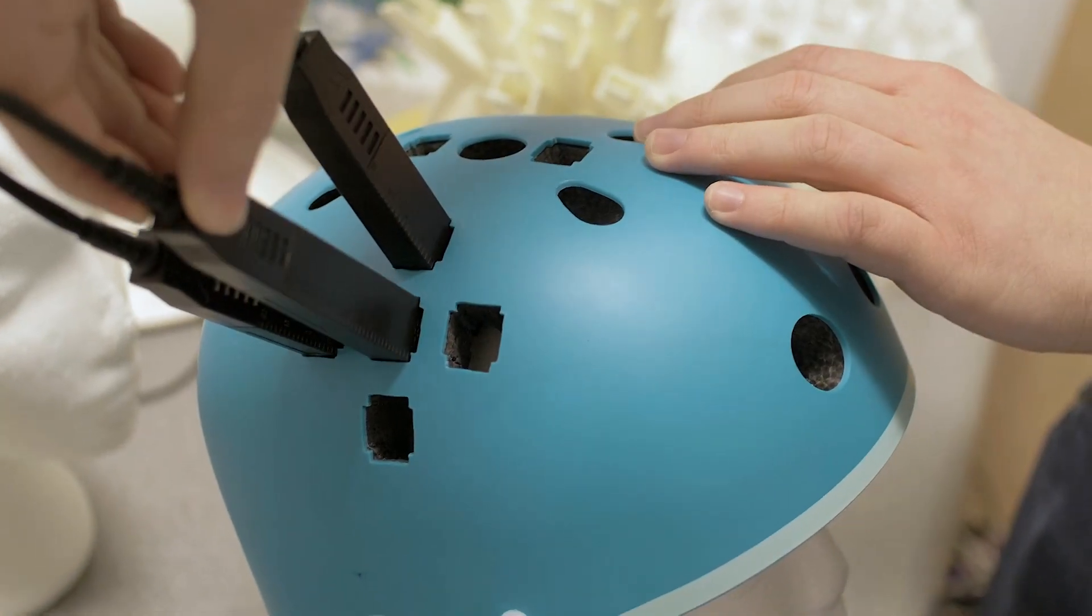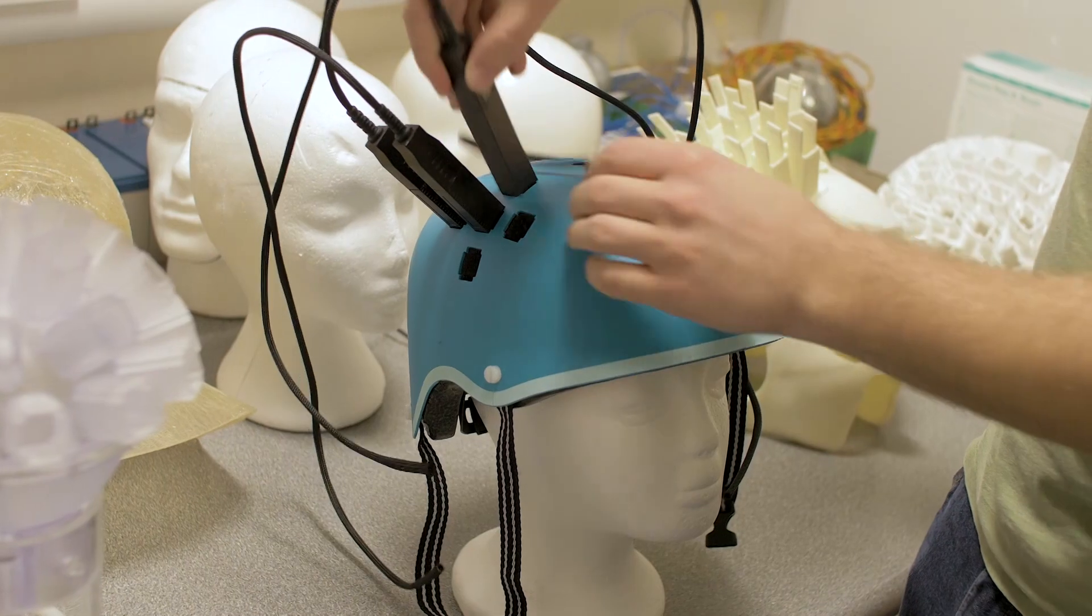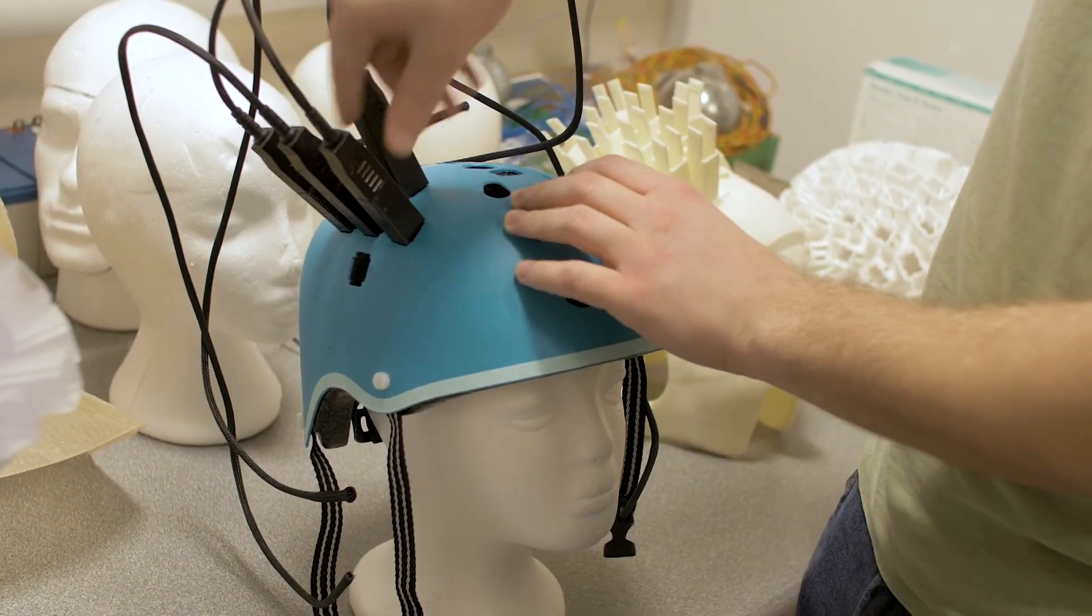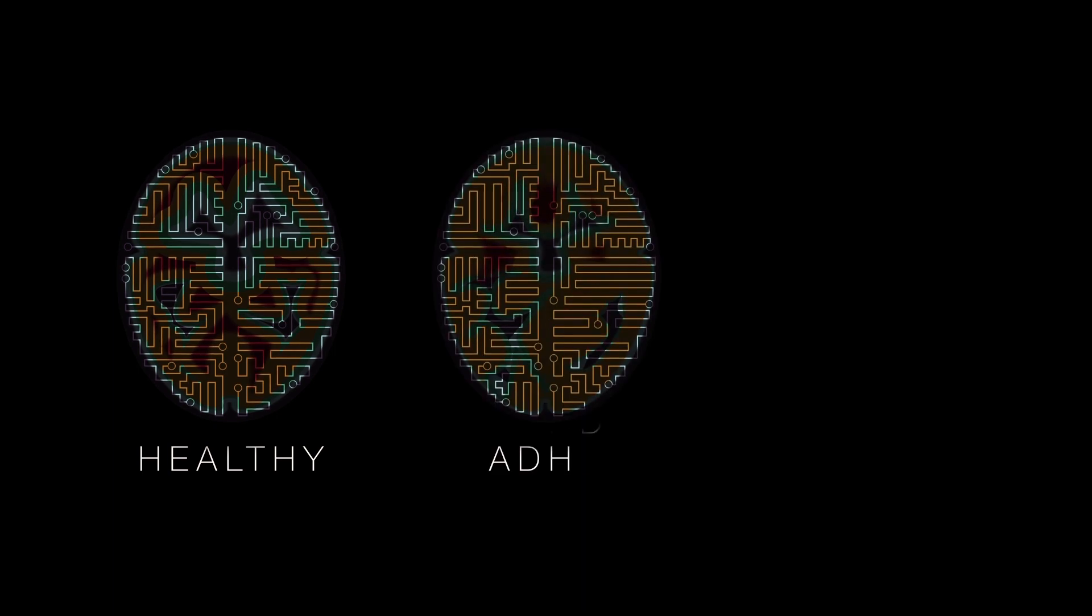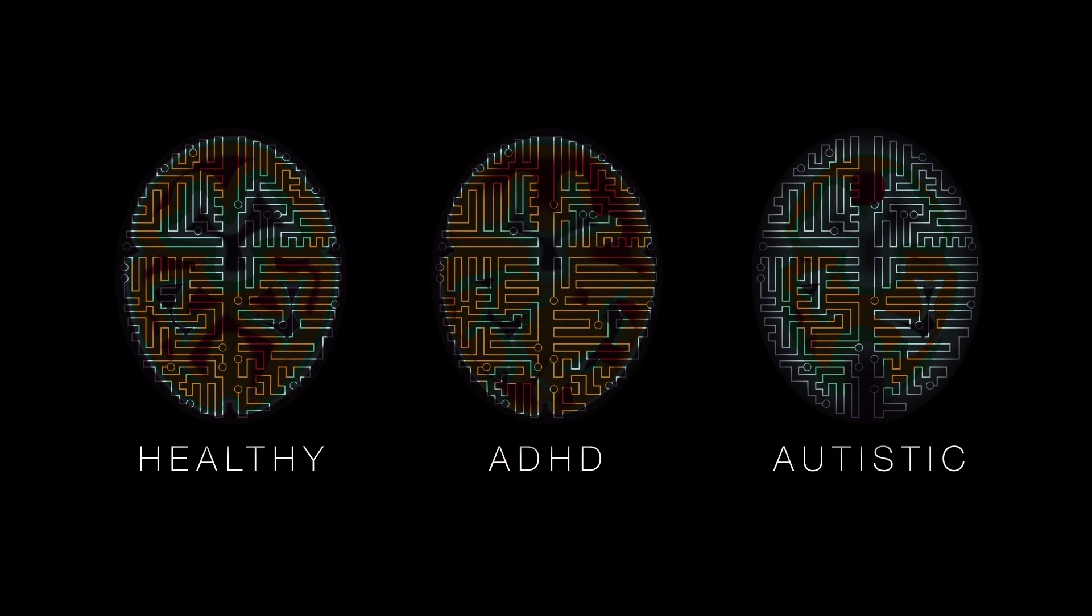So using these new sensors where we can bring them into the scalp and fit them to whatever head size we want, we can start to look at how a child's brain develops. This will hopefully let us see how certain disorders come about, such as Asperger's or ADHD—several things that develop in childhood.